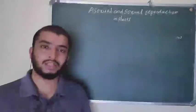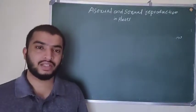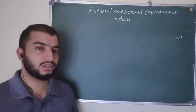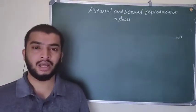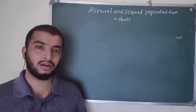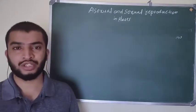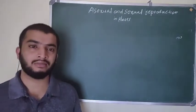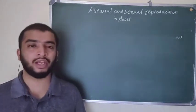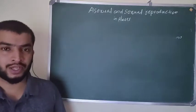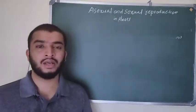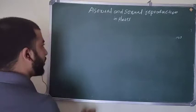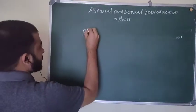Dear students, welcome to 12th class botany. We were discussing about asexual and sexual reproduction in plants. Last class we covered conditions of cross pollination, or mechanisms present in plants for promoting cross pollination. We have covered all those details. Today we are going to study about pollinating agents.